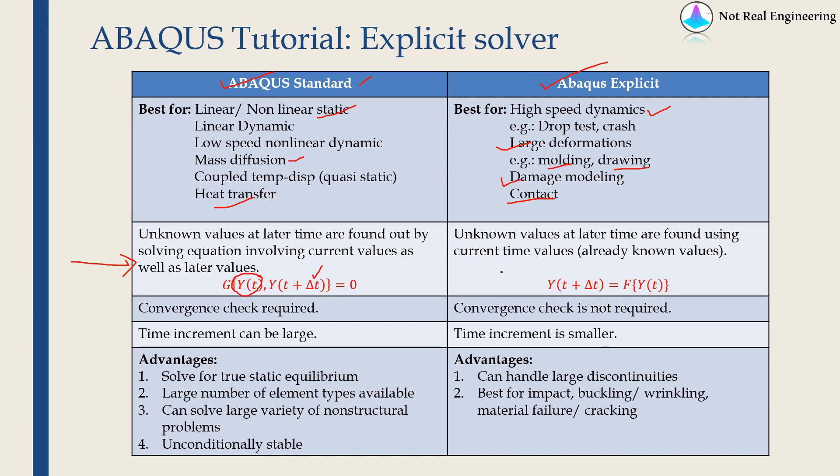If you see what we do in Abaqus explicit, here we express values at later time as some function of values at current time. Therefore, we know everything on the right hand side of the equation. We just have to put the values on RHS and we will get unknown values. But here we have to solve this equation somehow. But this is very simple and straightforward process.